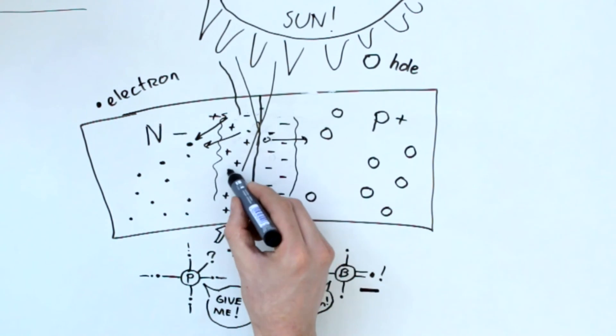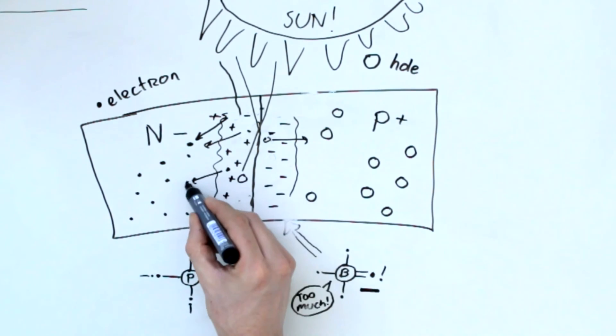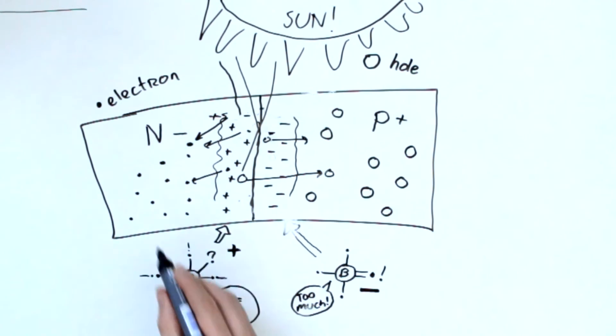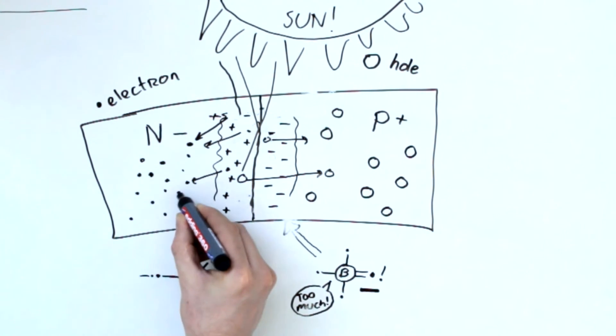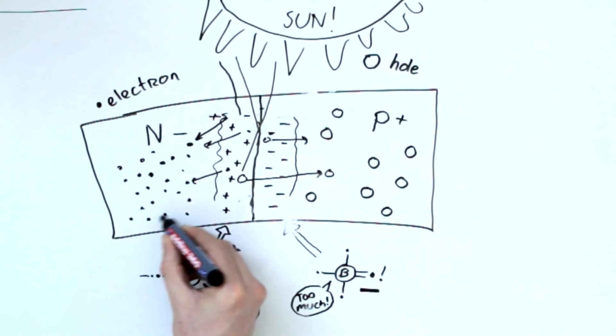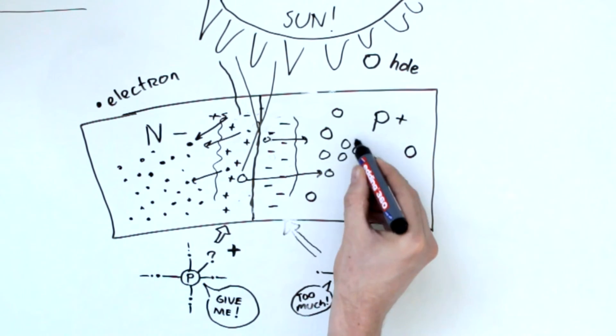This causes the free electrons to fly towards the N-side, where it joins up with the other free electrons. The hole, on the other hand, moves toward the P-side and is joined with other free holes. This causes a buildup of energy.